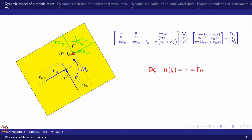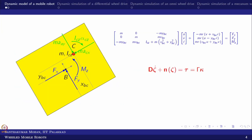We are going to use the equation: D·ζ̇ + N(ζ) = τ, where τ = γ·κ. We are trying to incorporate this relation into the existing dynamic model which we built in lecture 12.